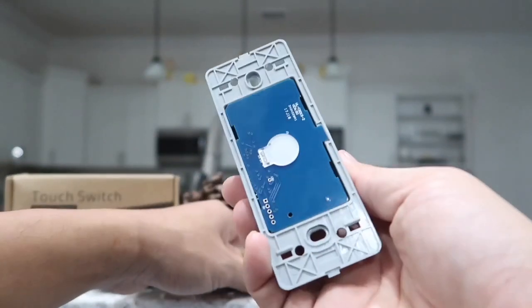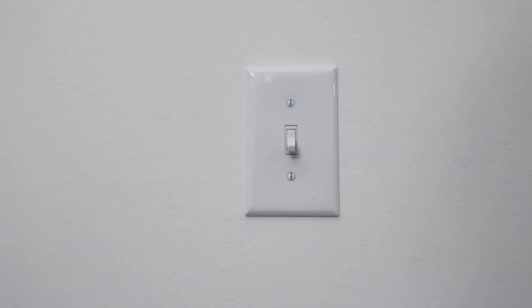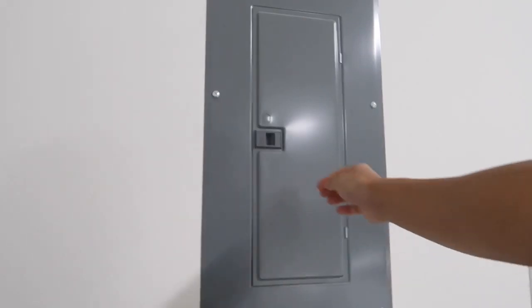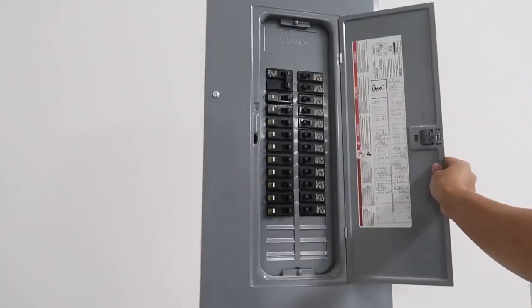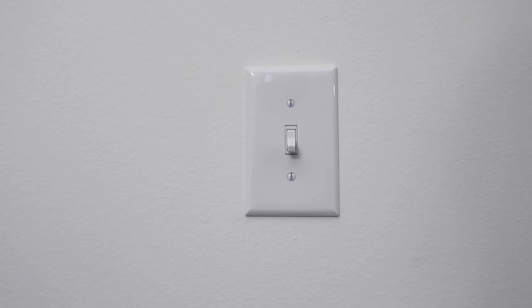And now to install our brand new smart switch, the first and most important thing we need to do is to turn off the circuit breaker to this switch right here so that we will not get electrocuted during our installation. So go and find your house circuit breaker box and turn off the circuit to this switch.